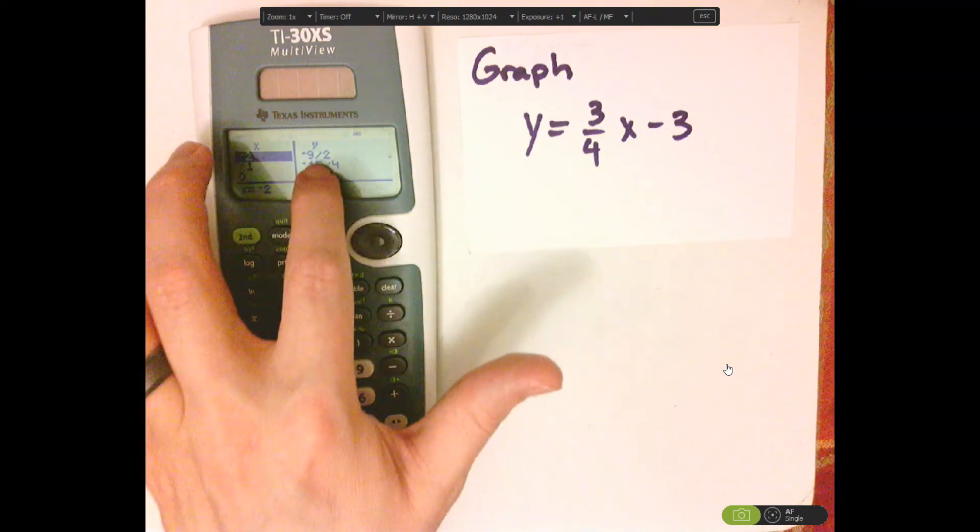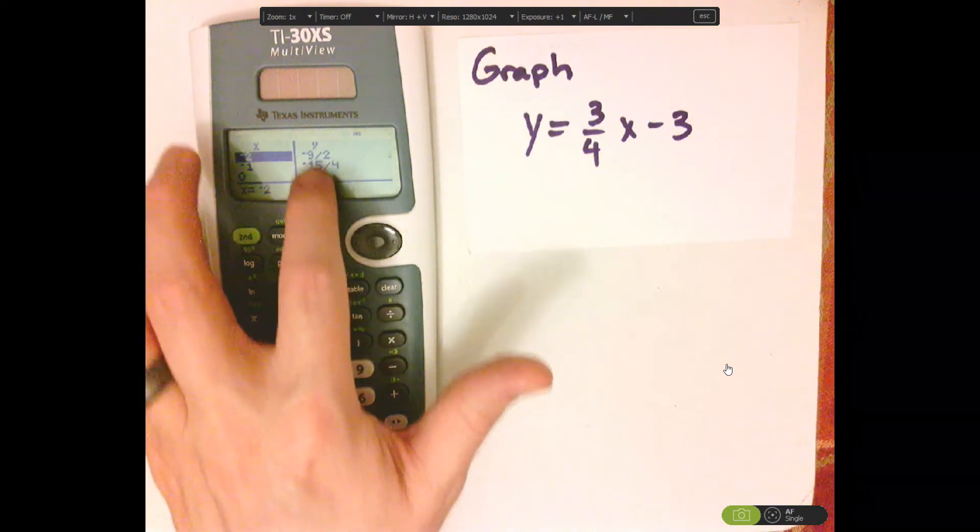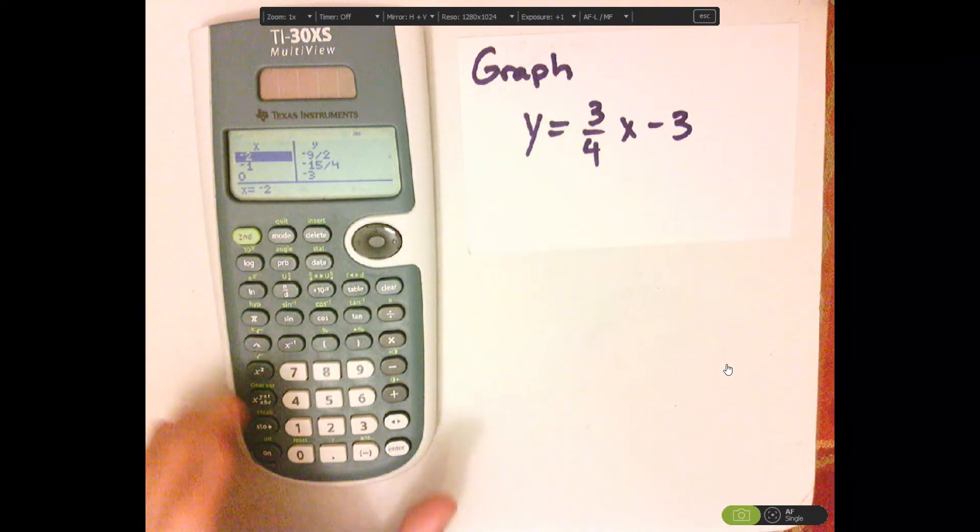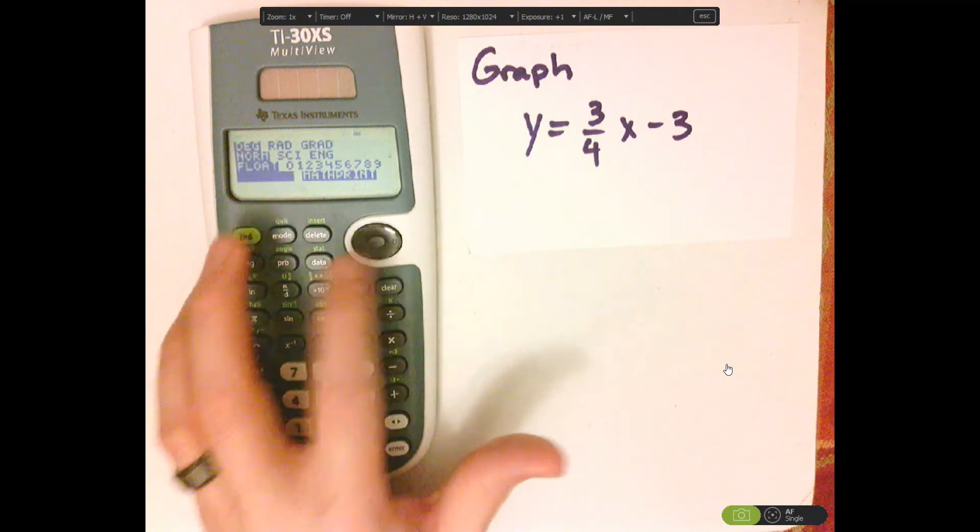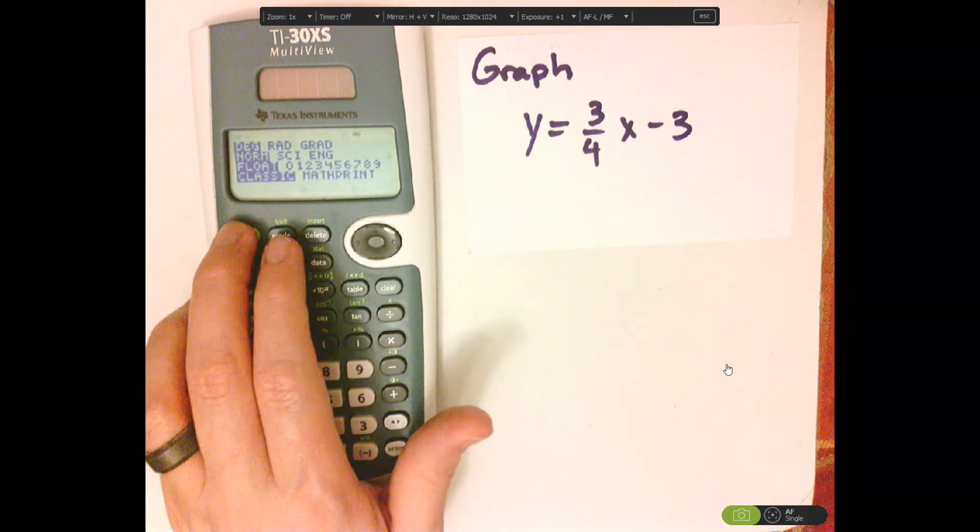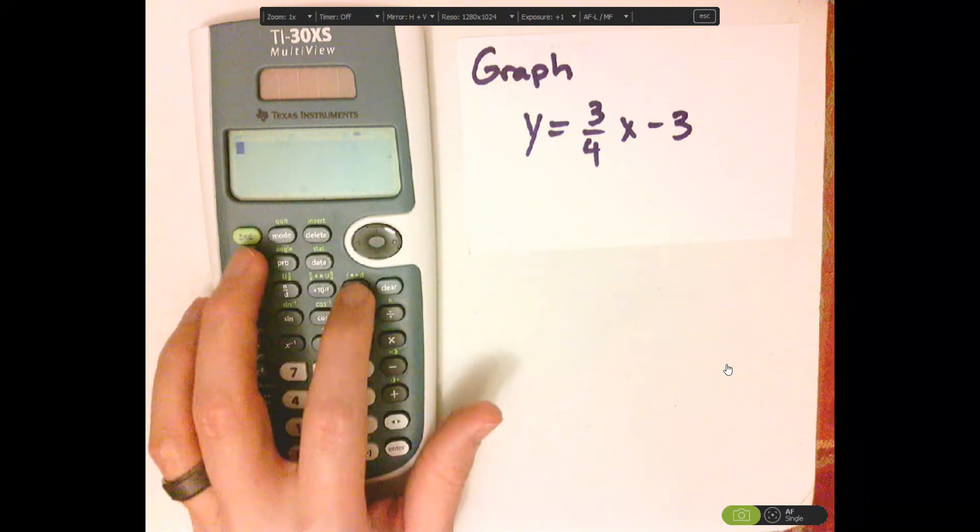Notice that these are all in fractions, and that's because it's in math print. So if I go to mode, and I go to classic, enter, go to table,